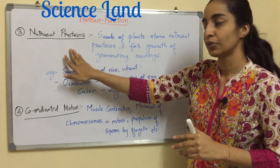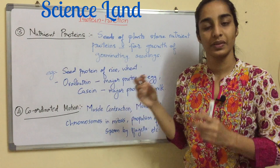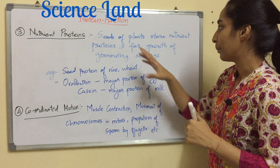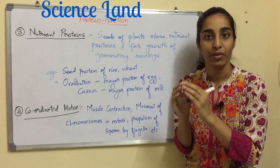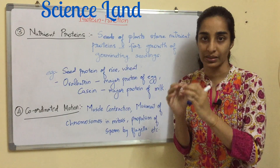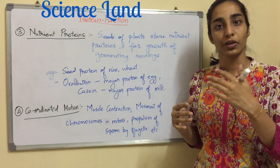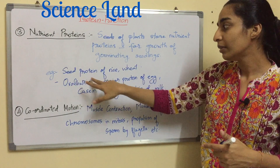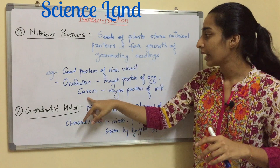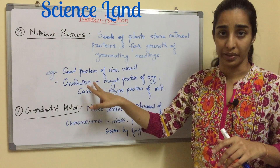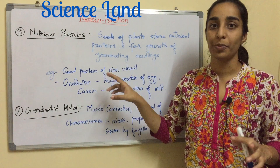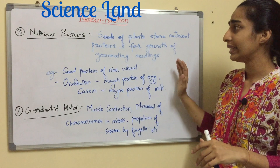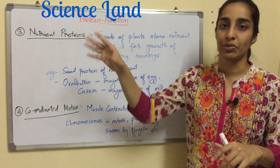Moving on, the third function is nutrient proteins. Certain proteins provide nutrition. For example, seeds have stored reservoirs which are required for the growth of germinating seeds — such as seed proteins of rice and wheat. Another example is ovalbumin, which is a major protein in egg. Casein is the major protein of milk. All these are nutrient proteins.